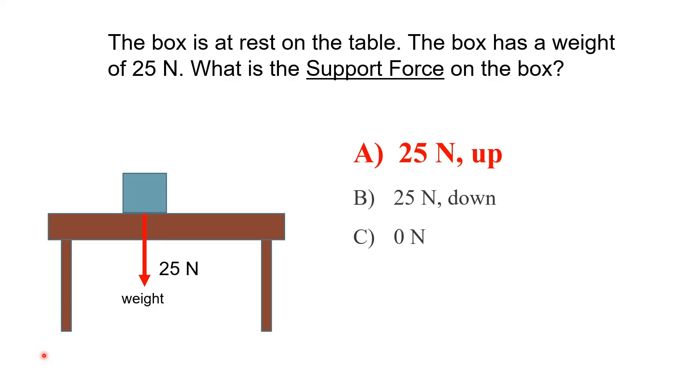It's 25 newtons up. The weight is pulling the box down. You can think of weight as the force of gravity in this specific example. So we know that's going to be pulling it down. But we also know that it's at rest. So all the forces have to add to zero.